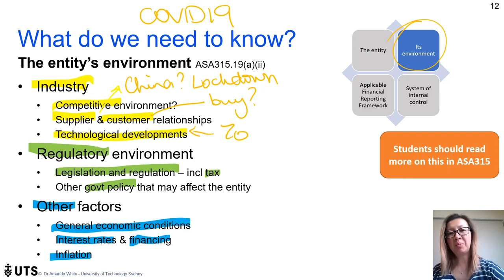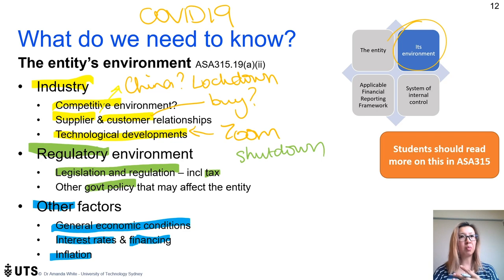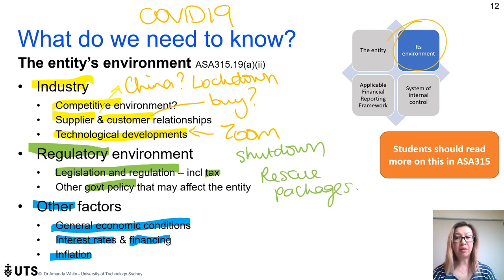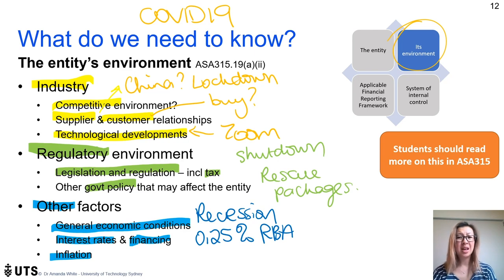Consider how technology has changed businesses like video conferencing companies. Legislation and regulation can force shutdowns, mandate particular products, or deliver rescue and assistance packages. On general economic conditions, we know we're heading into a recession: interest rates are at 0.25% following the latest RBA cut, there's very little room to move, refinancing is difficult, and inflation on everyday staples is likely to increase due to high demand and limited supply.